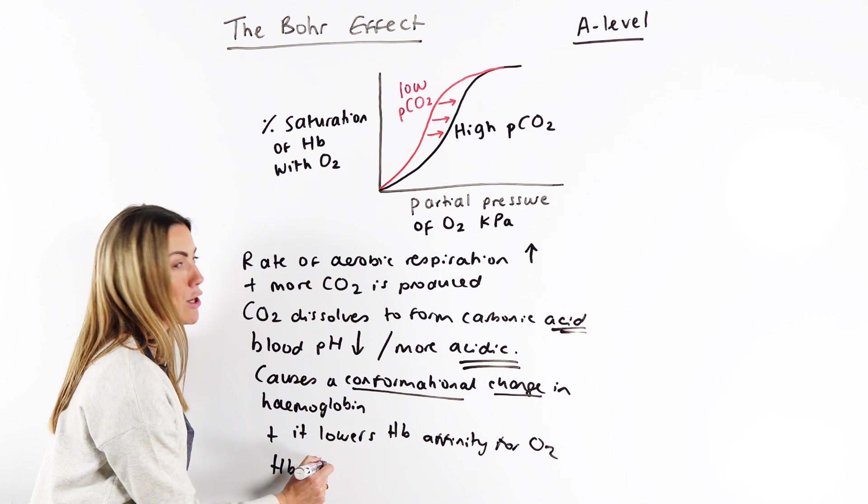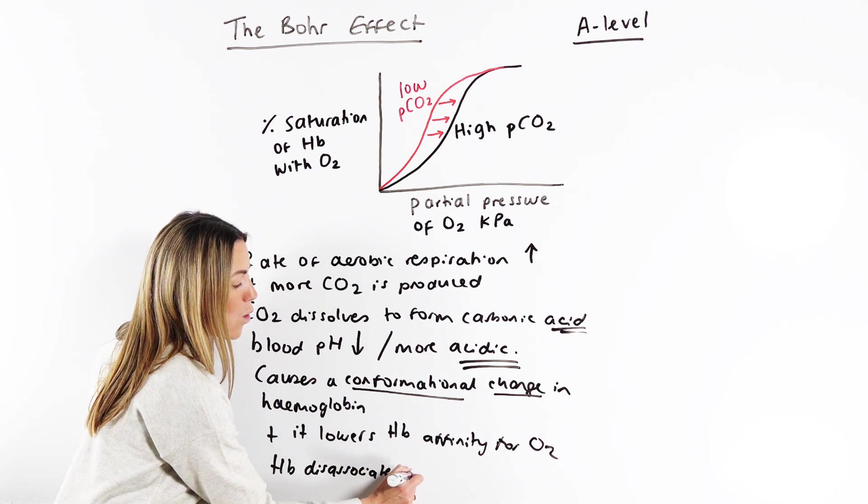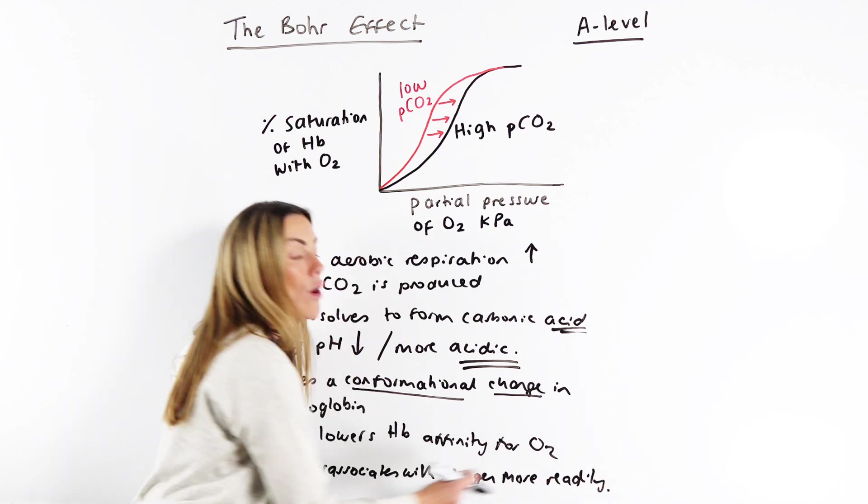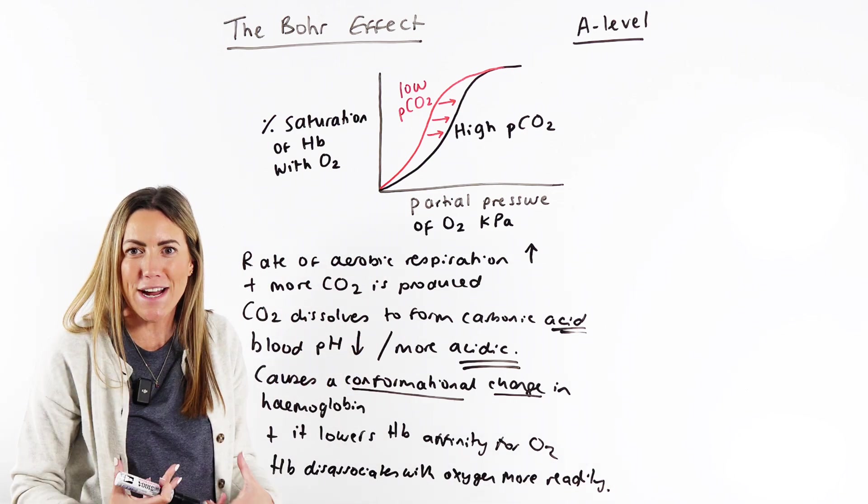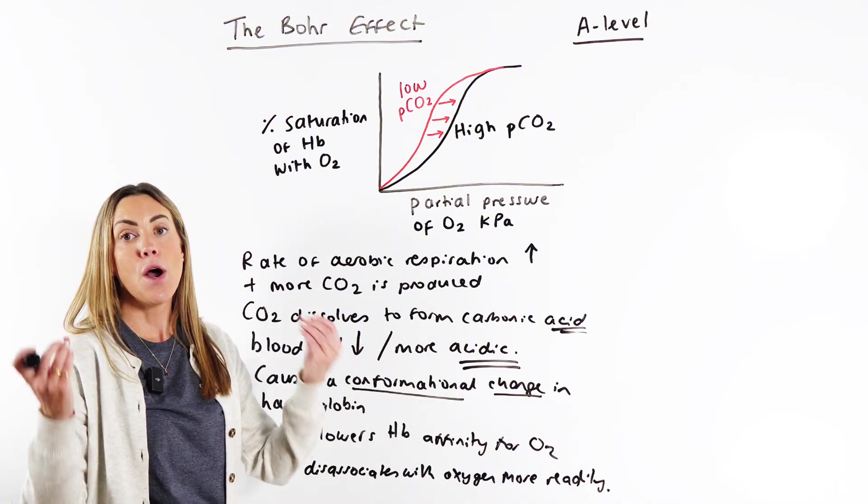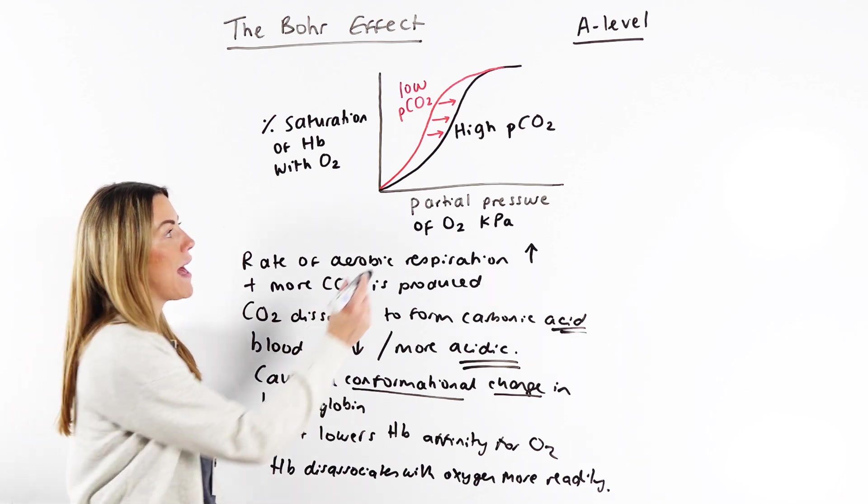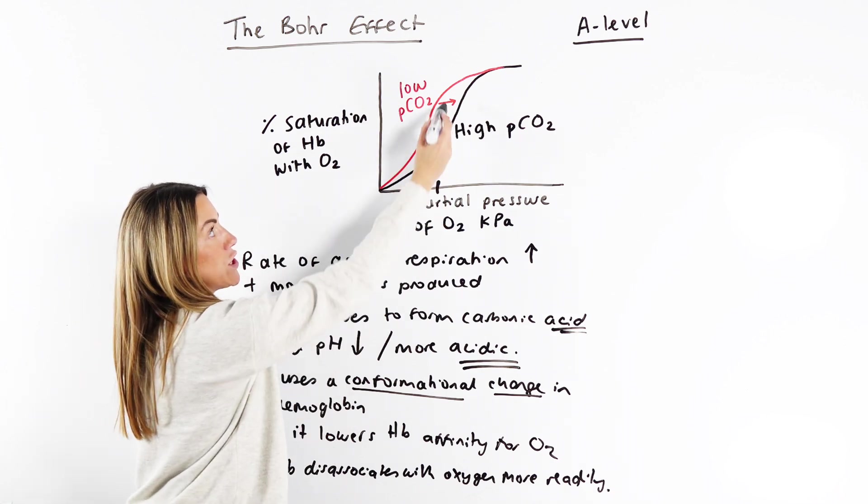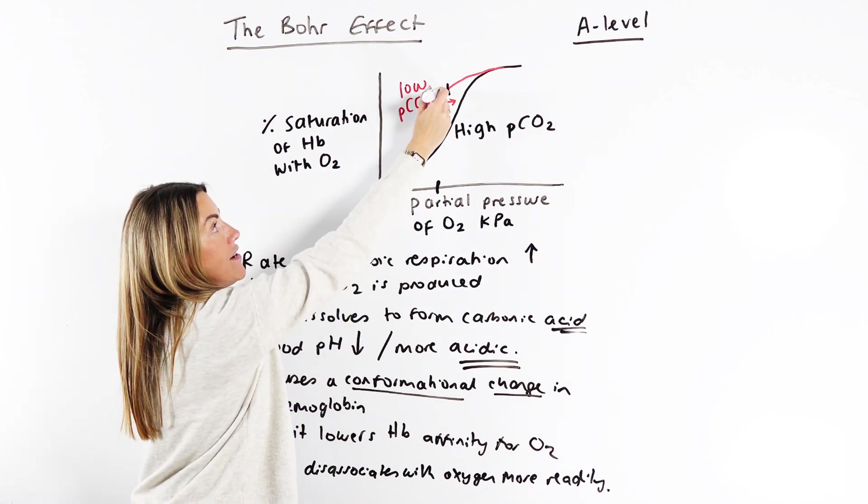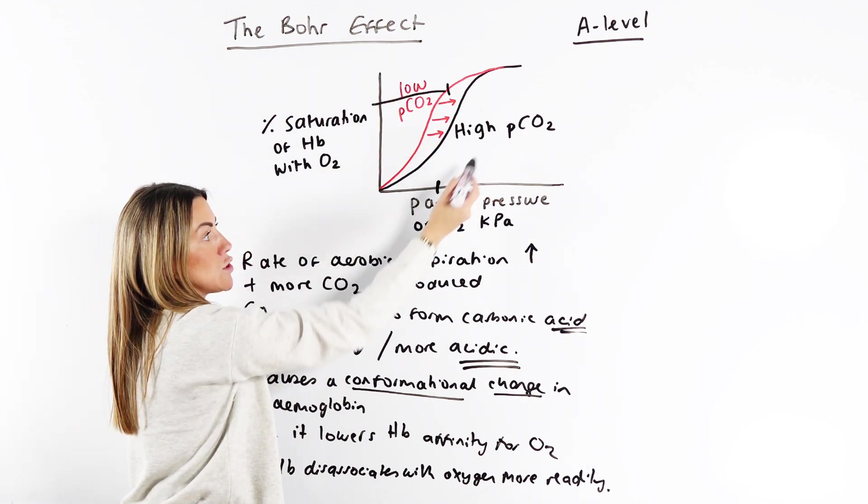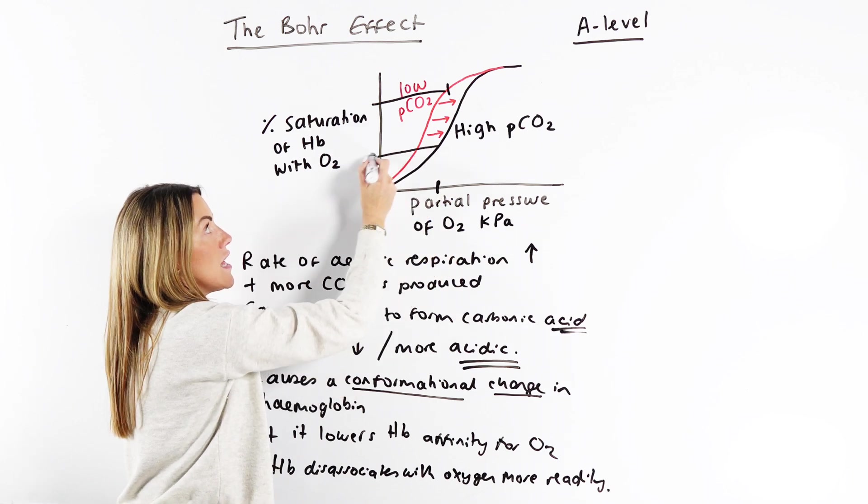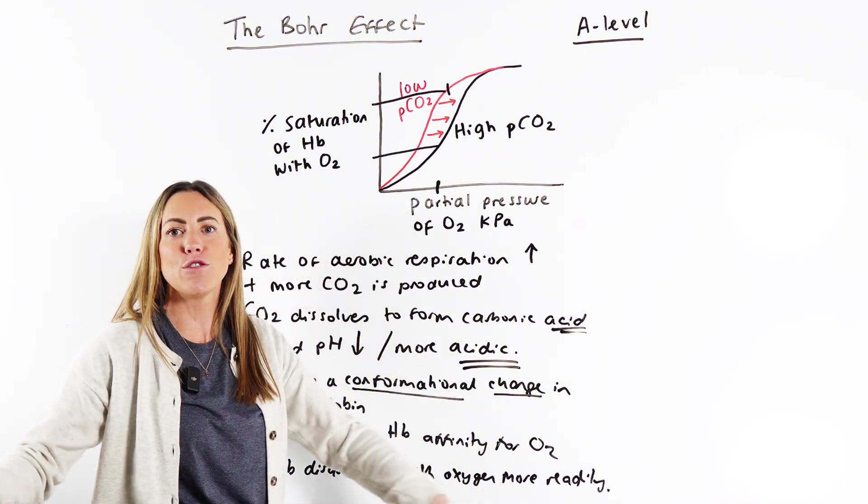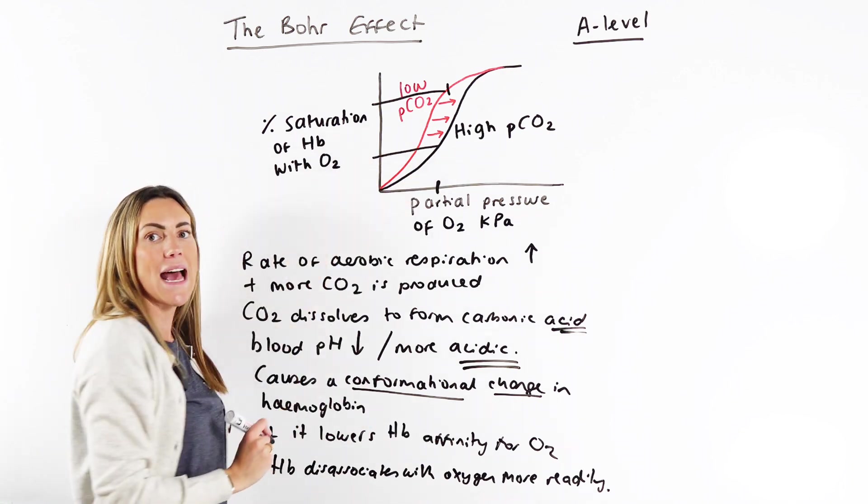And if its affinity for oxygen is reduced, this means hemoglobin dissociates with oxygen more readily or more easily. It's not holding onto it as tightly. It's going to dissociate or unload with oxygen more easily. And you can see that on the graph, because if you compare the same partial pressure on these two curves, at low partial pressures of CO2, the percentage saturation of hemoglobin with oxygen is much higher. At high partial pressures of CO2, we look at the same point on the graph, the percentage saturation of hemoglobin with oxygen is much lower because it has dissociated or unloaded more oxygen. So the hemoglobin is far less saturated.